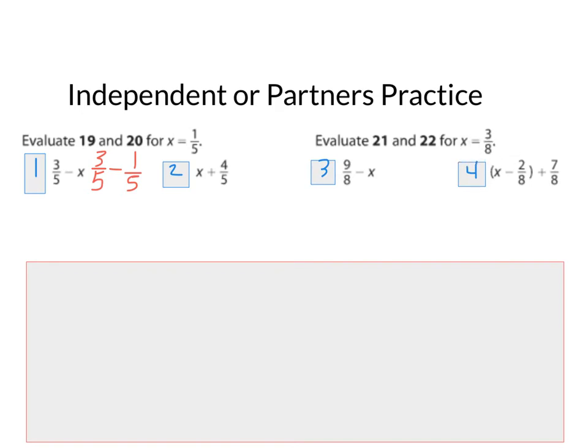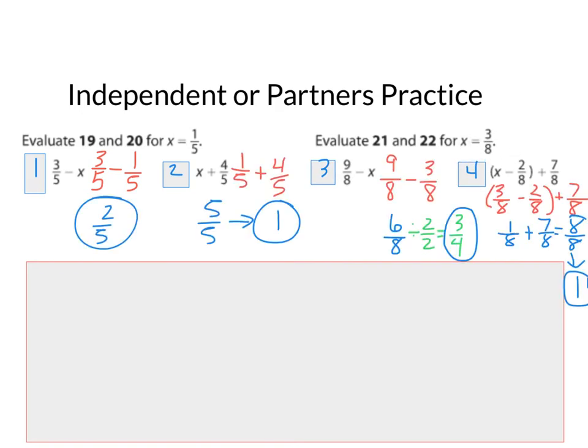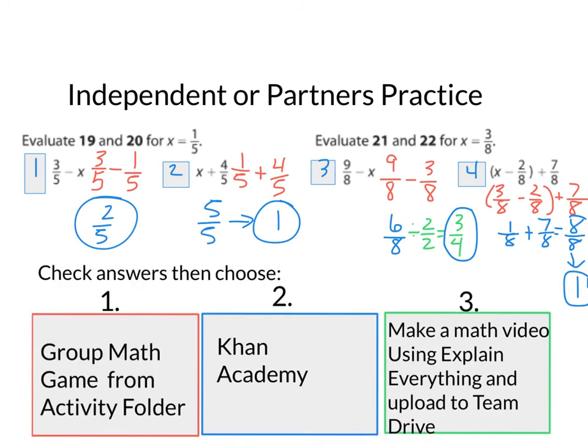The answers are coming in 3, 2, 1. Here are your answers for independent or partner's practice. Make sure that you have work just like this. And make sure that you have the original problem written, starting with that. After you're done with these, you have options. Please choose one of these three options. Thank you so much for watching this video, and please don't forget, you're awesome.